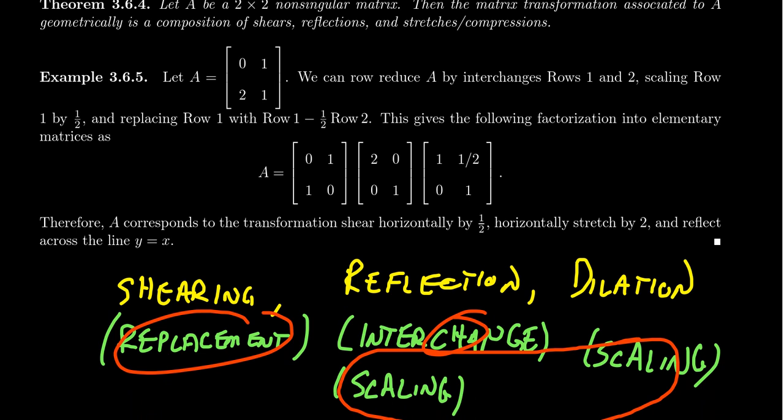Consider the matrix [0, 1; 2, 1]. So we can show that this matrix is in fact non-singular. What we would do is we would first probably interchange the rows. So here's an interchange matrix right there. Then when you interchange the rows, you'll end up with [2, 1; 0, 1].